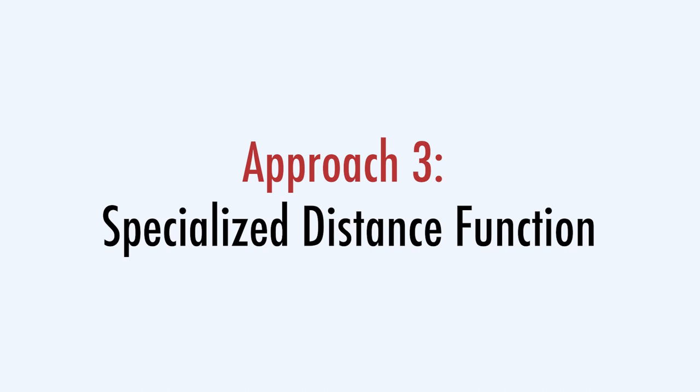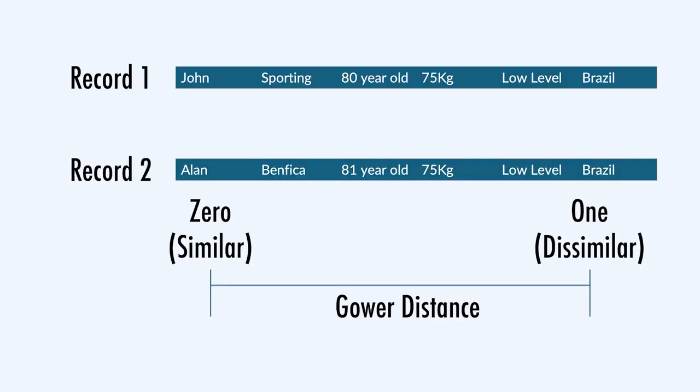A third approach to deal with this problem of categorical variables is to use a distance function that is more suited to mixed data — data that is both categorical and numerical. A useful distance function for mixed data is the Gower distance, which can measure how different two records are. The records may contain combinations of binary, numerical, categorical, or text data. The distance is always a number between 0, when they are identical, and 1, when they are dissimilar.